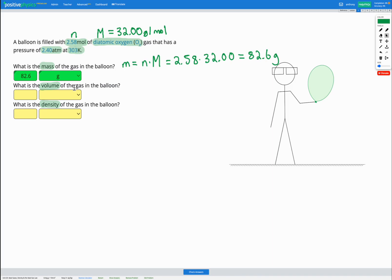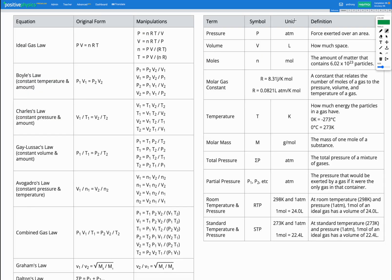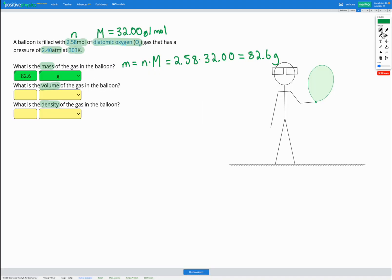Now, in the question, we're given the number of moles, the pressure, and the temperature. So we're going to be using our equation for ideal gases in order to figure out the volume of the gas. So again, let's head to our equation sheet. And here's our ideal gas law we used in the previous skill. PV equals NRT.